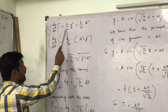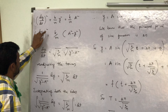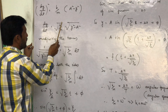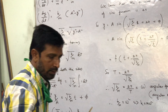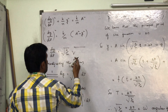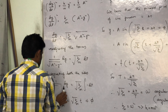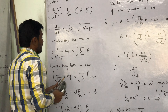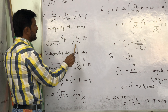Substituting C back: (dy/dt)² + (k/m)·y² = (k/m)·a². Rearranging: (dy/dt)² = (k/m)·(a² − y²). Taking the square root: dy/dt = √(k/m) · √(a² − y²). Re-arranging terms: 1/√(a² − y²) · dy = √(k/m) · dt.